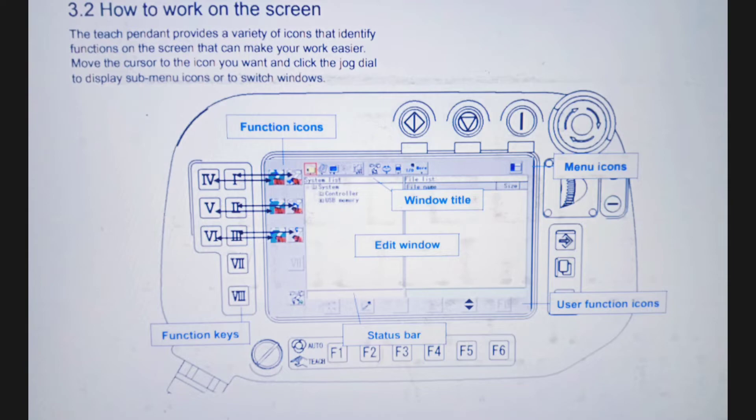Function keys, status bar. All the function keys you can see on the screen of the teach pendant. These function keys from F1 to F8 are in Roman numerals. This is the status bar.